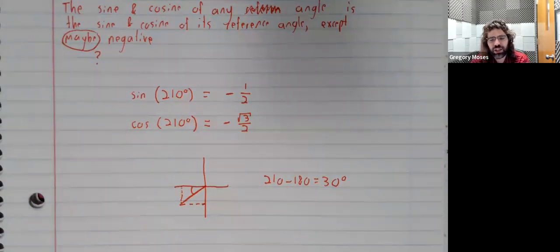So we see that the sine of 210 degrees is negative one half. The cosine is negative the square root of 3 over 2.